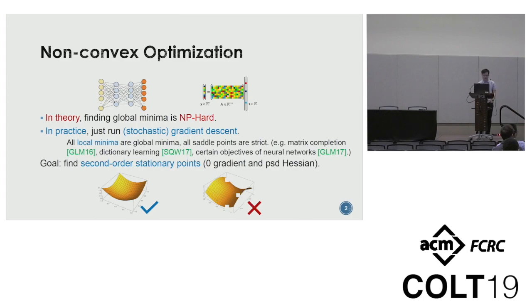In theory, we know finding global minimum is NP-hard in general, but in practice, people just run gradient descent and it works well in many situations. Recently, there is a line of work trying to explain these phenomena. It will show that all local minima are global minima and all saddle points are strict in many situations, for example, matrix completion, dictionary learning, and some neural networks.